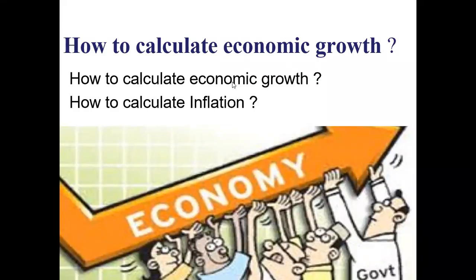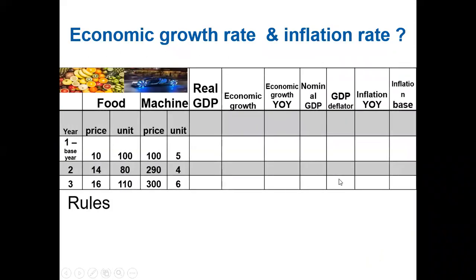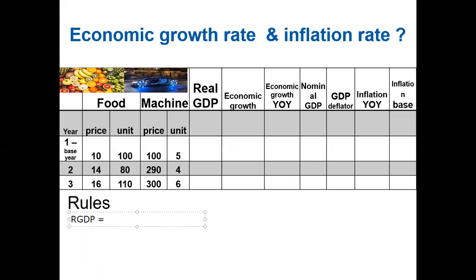In this economics tip, we look at how to calculate economic growth and inflation rate. We have a simple economy consisting of the production of two products: food and machines. We need to find the real GDP, which represents the real increase in output — how much the number of units increases from one year to another. Real GDP depends on real production: current units produced times base year prices.